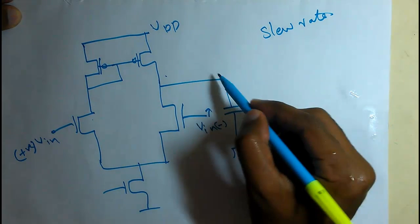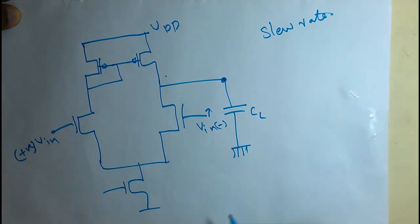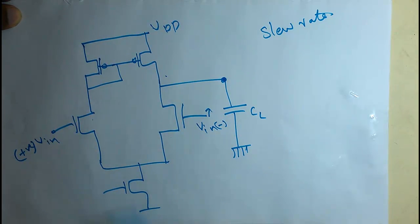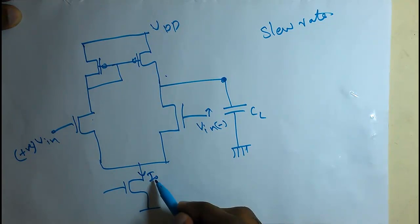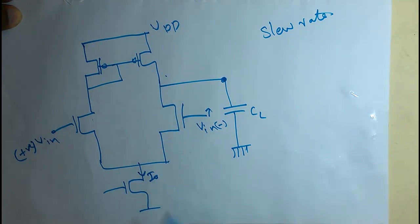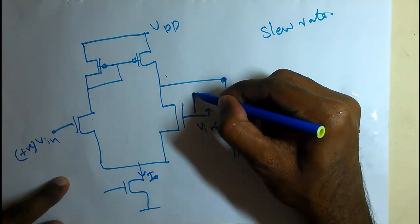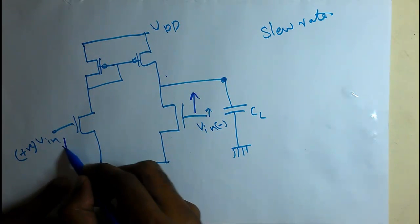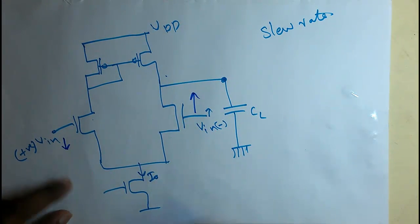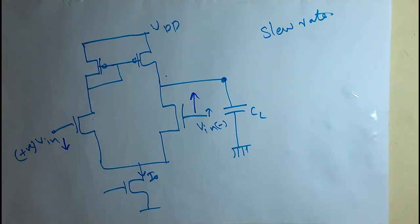Slew rate is the rate of change of the output — that is, how quickly the output can change, and what are the limiting factors. If we have this circuit and the tail current I0 is flowing, suppose there is a sudden change in the input voltage: this input voltage goes up, and this one goes down. So how quickly can the output change?